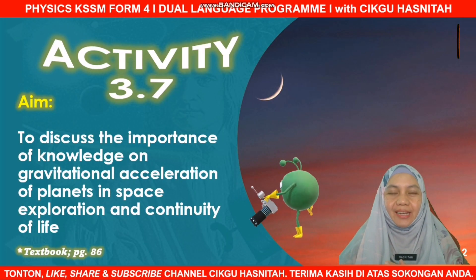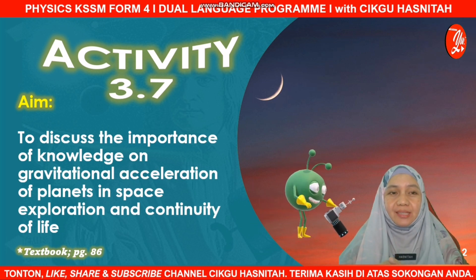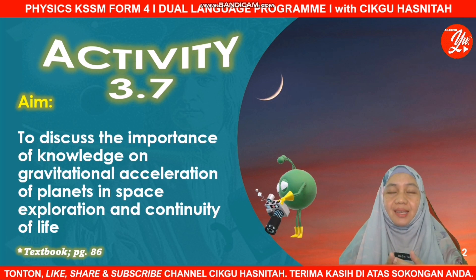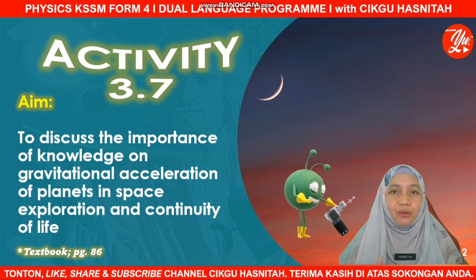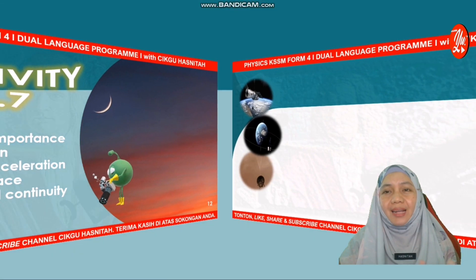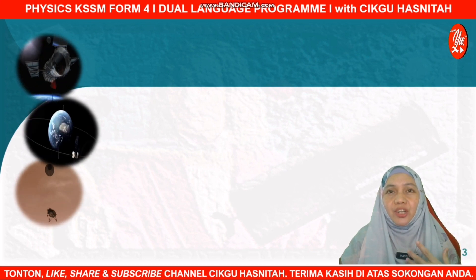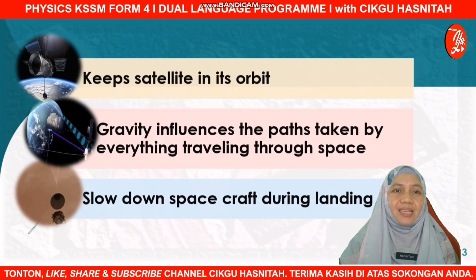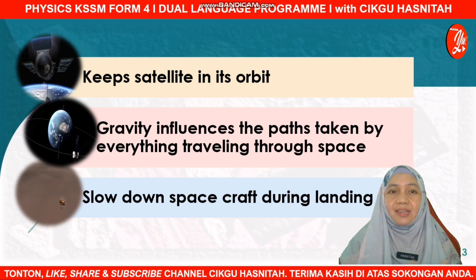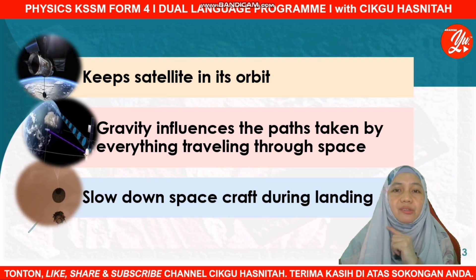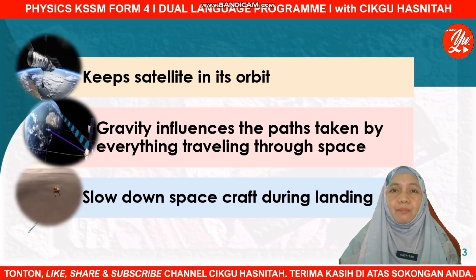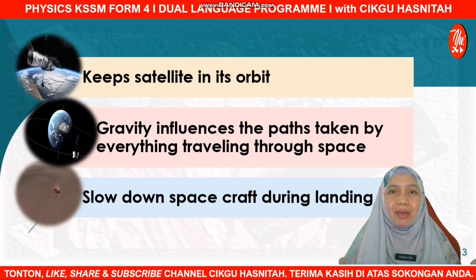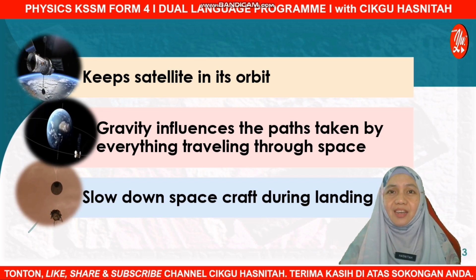Okay students, let's continue with the second activity, 3.7, on page 86. In this activity, we are going to discuss the importance of knowledge on gravitational acceleration of planets in space exploration and the continuity of life. The key points are: first, to keep the satellite in its orbit; second, gravity influences the path taken by everything travelling through space; and third, to slow down the spacecraft during landing — knowing the gravitational acceleration helps estimate the velocity needed to land on the surface of a planet.